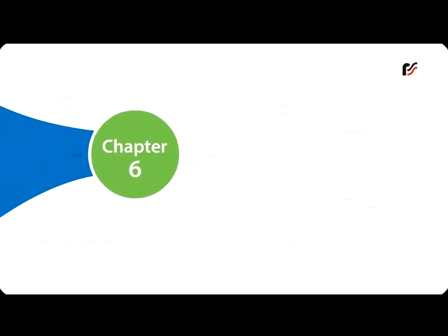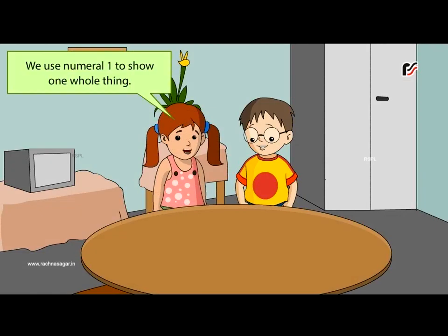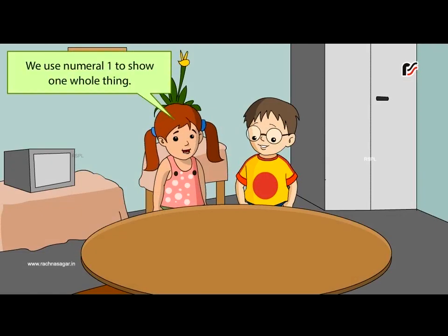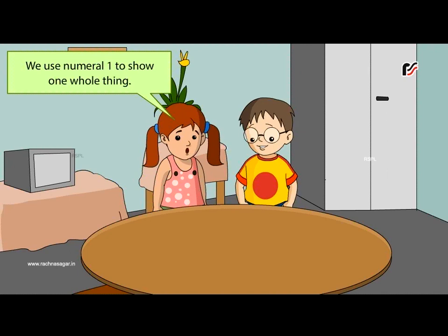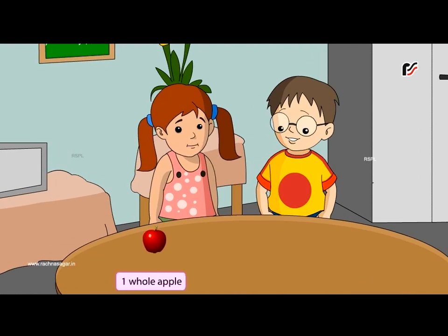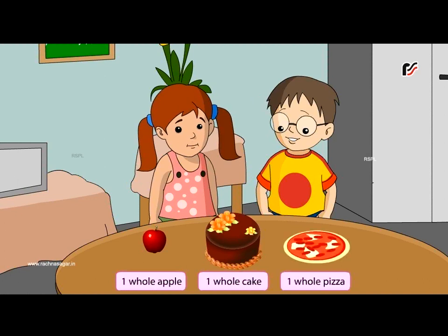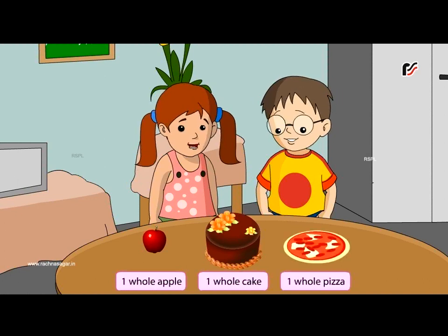Chapter 6: Fractions — Fractional Numbers. One Whole: We use the numeral 1 to show one whole thing. For example, one whole cake, one whole apple, one whole pizza.